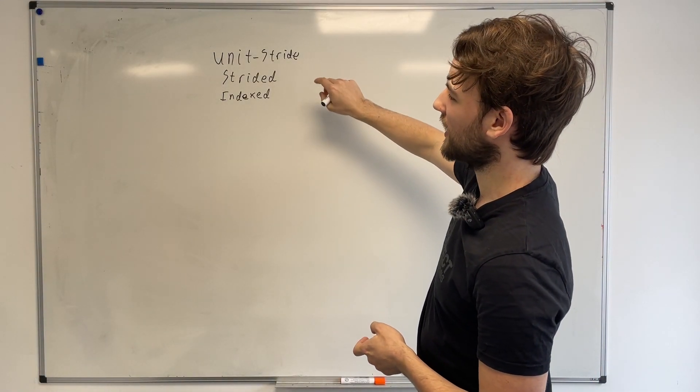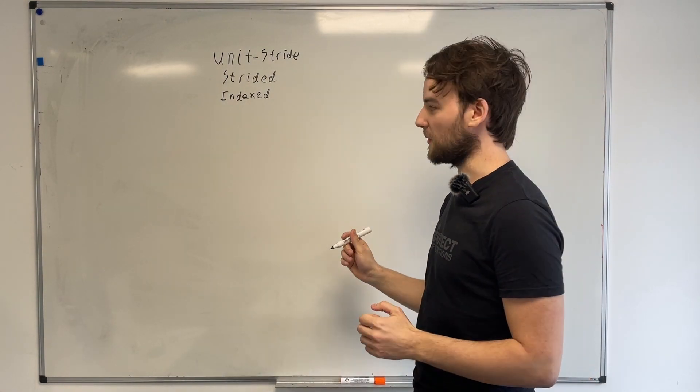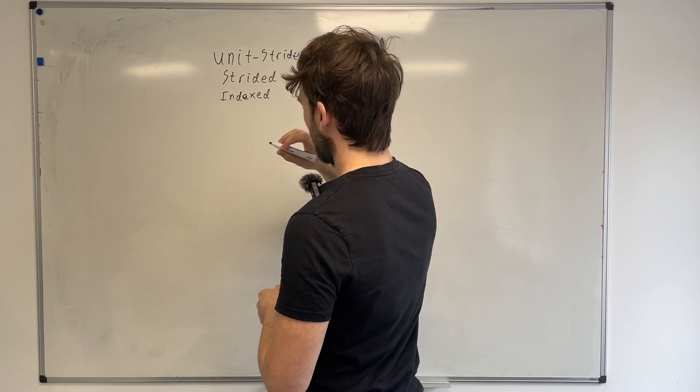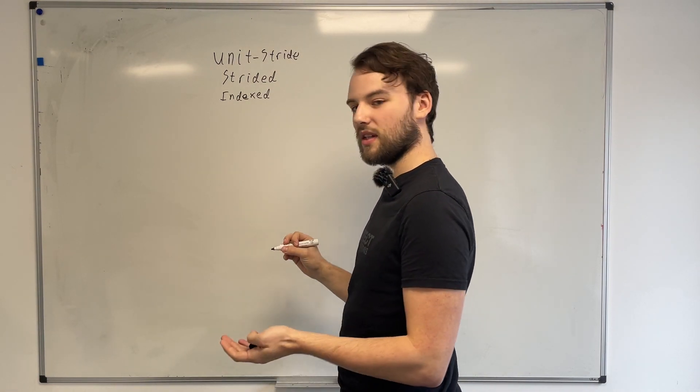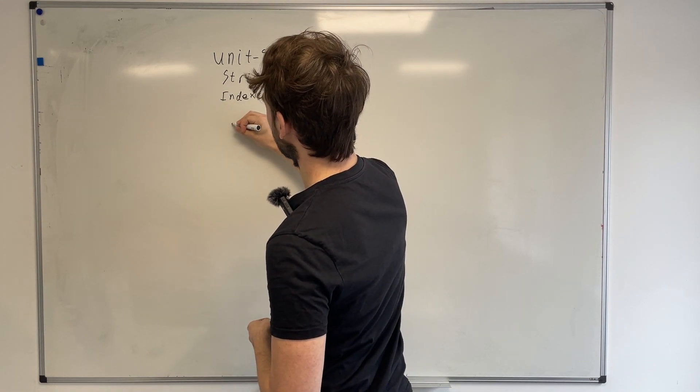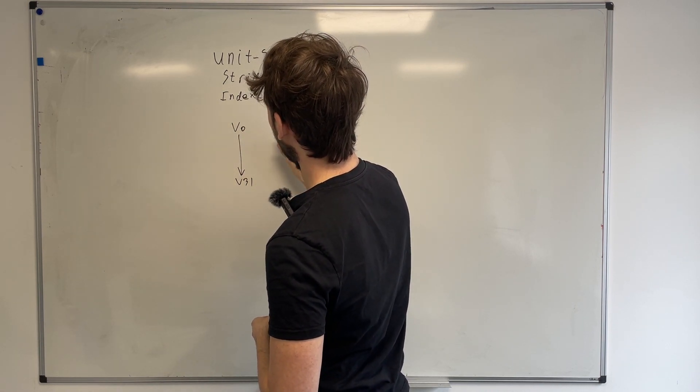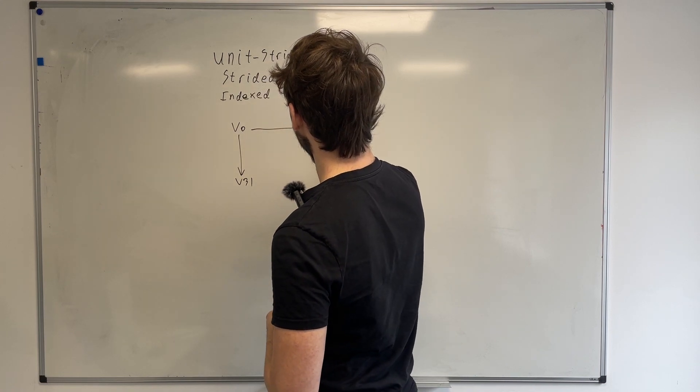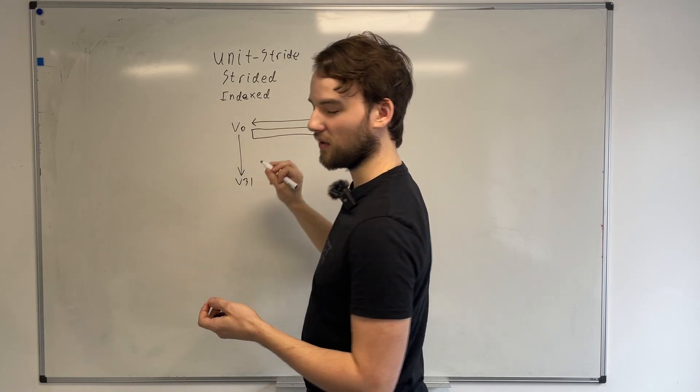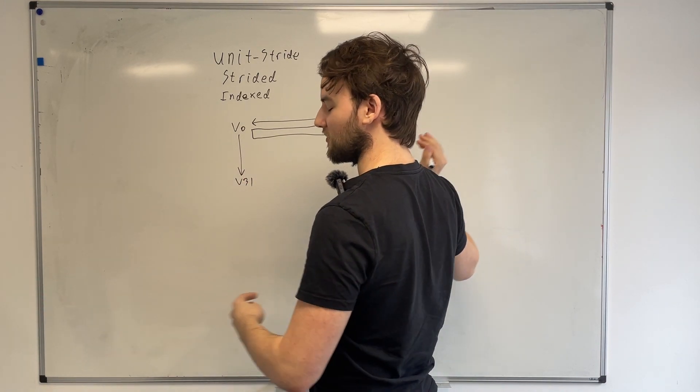So if we just look at the unit stride case first, this essentially takes contiguous chunks of memory and will load them into your vector register file. The vector extension adds 32 architectural registers, so there's V0 through to V31, and each of those registers are one vector length wide, which is a configuration you can choose. This can be anything from 128 up to ridiculously wide.